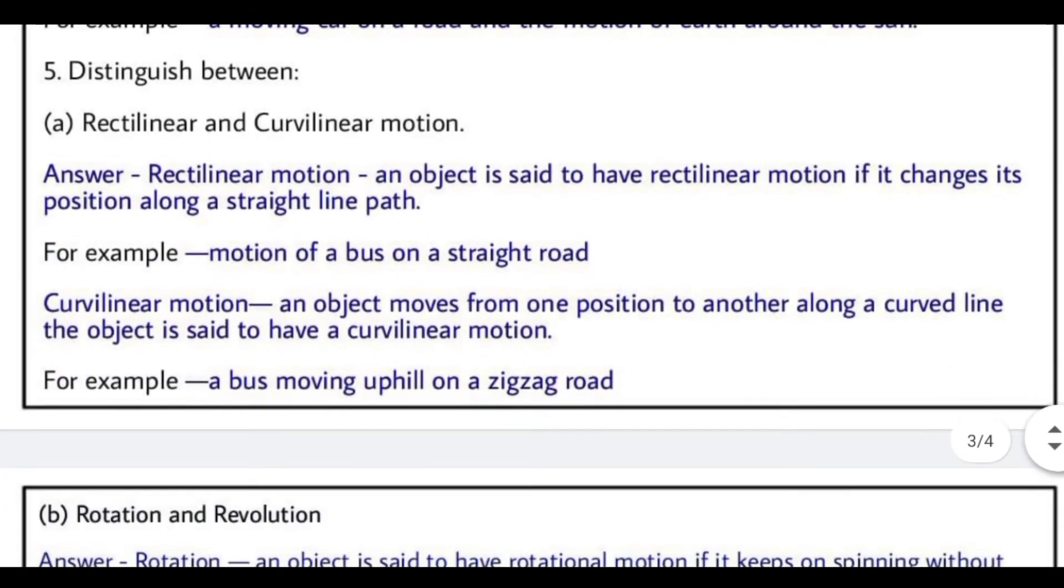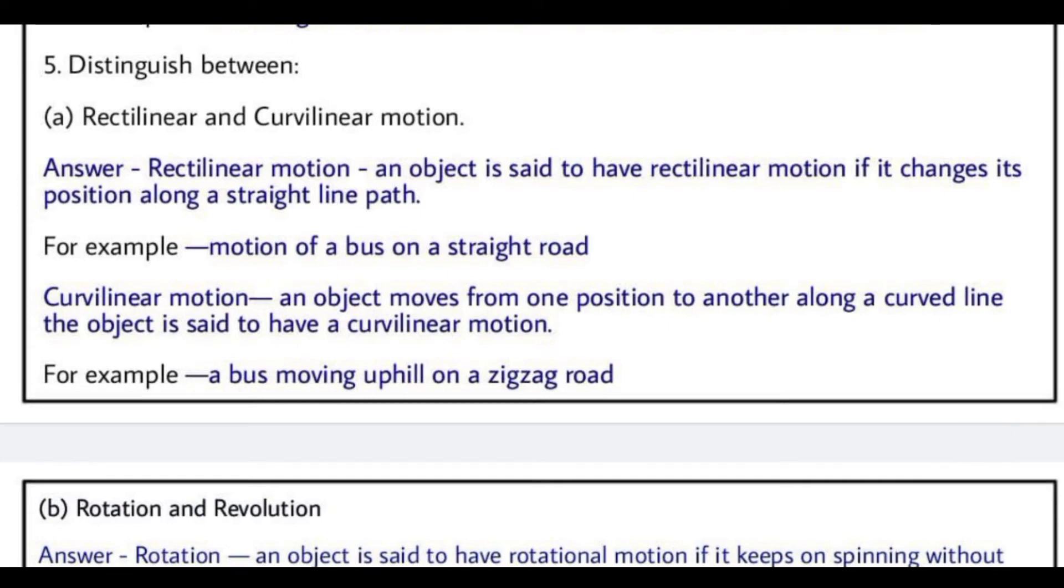Fifth one is, distinguish between rectilinear and curvilinear motion. The answer is, rectilinear motion: an object is said to have rectilinear motion if it changes its position along a straight line path. Seedhi raah mein agar motion ho raha hai, toh rectilinear motion hai. Aur iska example hai, the motion of a bus on a straight road. Curvilinear motion: an object moves from one position to another around a curve line. Agar curve line pe motion ho raha hai, toh hum usse curvilinear motion kehte hain. Aur iska example kya hai, a bus moving uphill on a zigzag road.